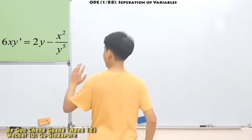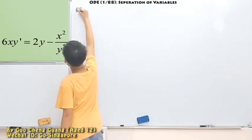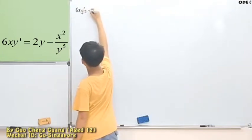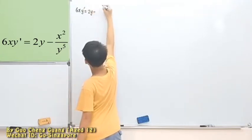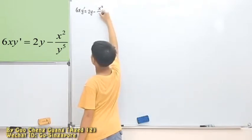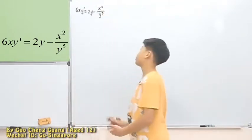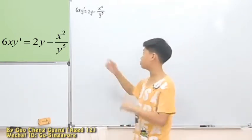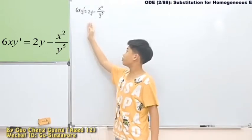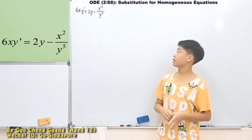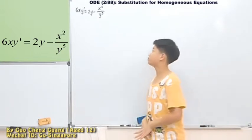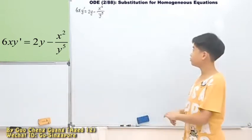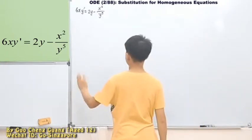This example that we have right now here is 6xy' and this is equal to 2y minus x squared over y to the power of 5. So firstly, let's take a look at what type of example. From these parts, you can say non-homogeneous. You can say that this is non-linear, non-homogeneous, non-linear.